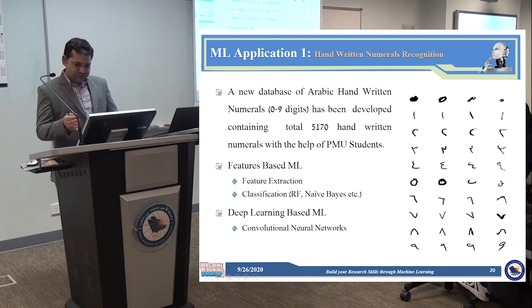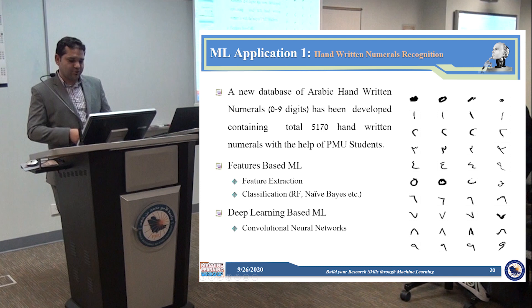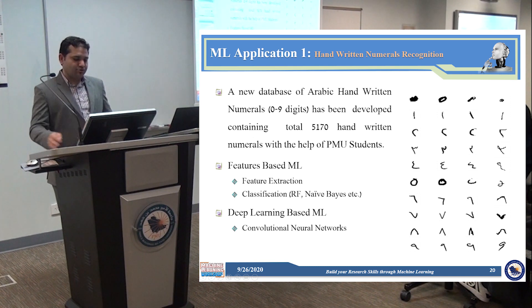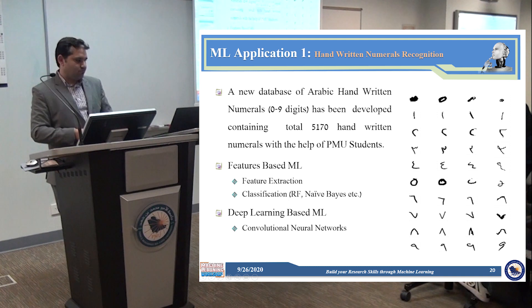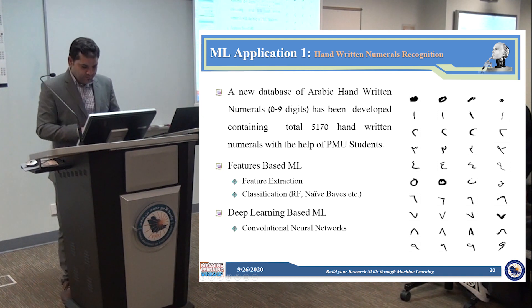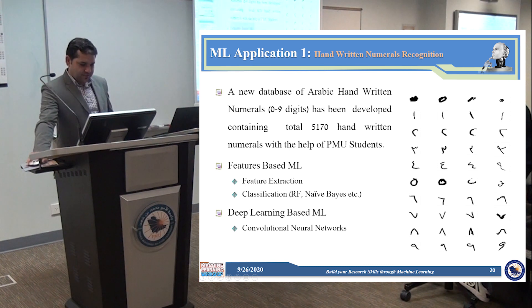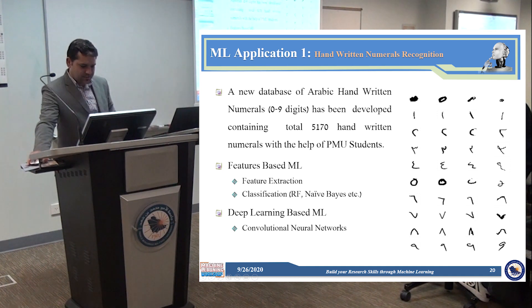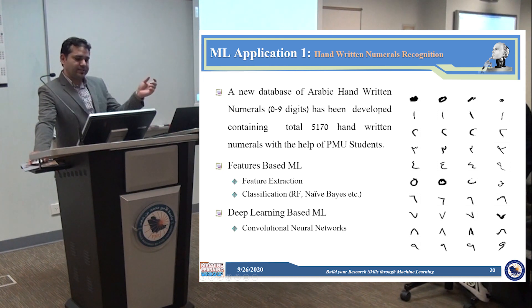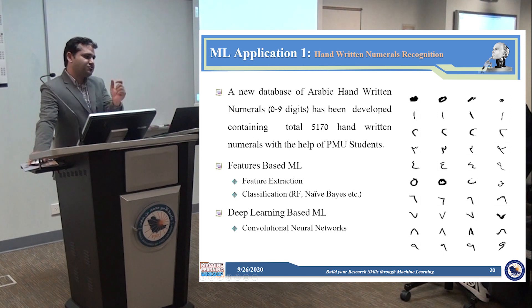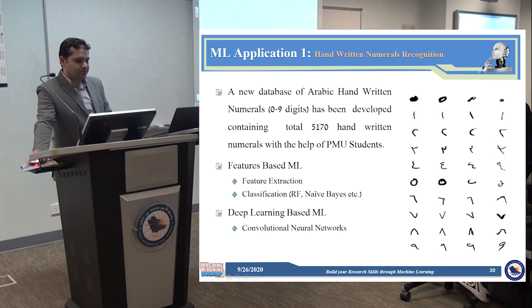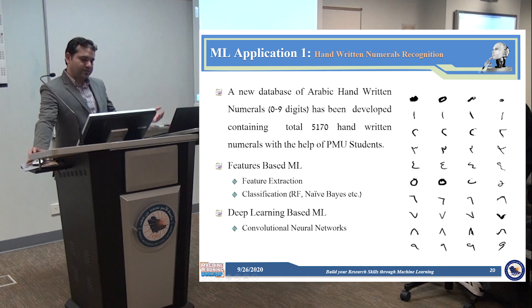We made our own dataset two years back — it was a small database. Although English numeral datasets were available online, and some Arabic ones too, we wanted to create our own. We created a simple, small dataset of around 5,070 handwritten digits. We asked students to fill out forms, then extracted those digits and prepared the dataset. The labeling was done by having students fill folders — when you read data from a folder named '1', the label is 1; from folder '3', the label is 3. So the labeling is done in a sort of automated way.